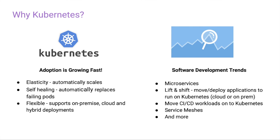Looking at some of the recent software development trends, there's been a major move towards microservices. Organizations are re-architecting their monoliths or starting new greenfield applications with microservices in mind — taking these monoliths, doing a lift and shift with some level of re-architecture towards cloud or on-prem deployments. All of the major cloud providers now have managed Kubernetes offerings which allow organizations to deploy their applications in either an on-prem or cloud-based Kubernetes cluster. A lot of organizations are even moving their CI/CD workloads onto Kubernetes, and adoption is growing incredibly fast.